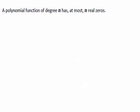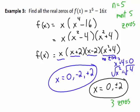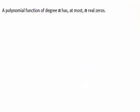Another important point about polynomials: the degree of the function is n, meaning the polynomial has at most n real zeros. Applying this to our example, n = 5, so we can have at most five zeros. We don't have to have five zeros, but at most we can have five. In this case we only found three zeros, but we could have had at most five. This is where n becomes important in determining the number of zeros.